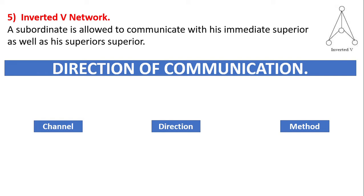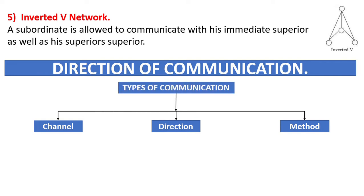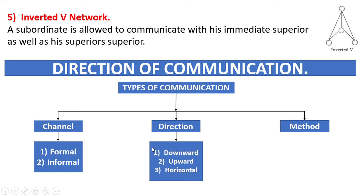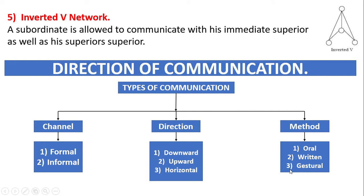The next topic is the direction of communication. There are three directions: downward, upward, and horizontal. The channel can be formal or informal. Downward direction means communication flows from the top level down. Upward direction means subordinates communicate up to the top level. Horizontal direction means communication between persons at the same level of authority. The methods of communication are oral, written, and gestural.